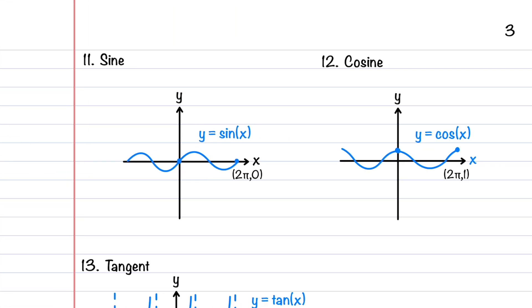Our last three parent functions are trigonometric functions. I have a whole series of videos on trigonometry if you want more details. The sine function is defined as y = sin(x). The graph is a wave-like pattern oscillating between 1 and -1. It's an odd function, symmetric about the origin, and has a period of 2π — meaning the function repeats every 2π units.